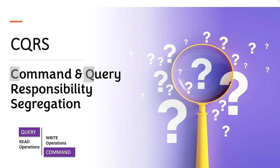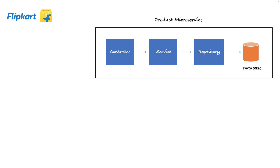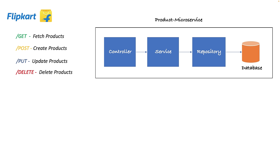Why do we duplicate the service to serve different responsibilities? To answer this, let's understand the challenges we face without CQRS. Take an example of a Flipkart e-commerce application with one product microservice handling all CRUD features like purchase, view, update, and delete. With its large user base on a big sale like Big Billion Days, out of 100 users, 30% will visit to purchase and the rest 70% will just search or view products.